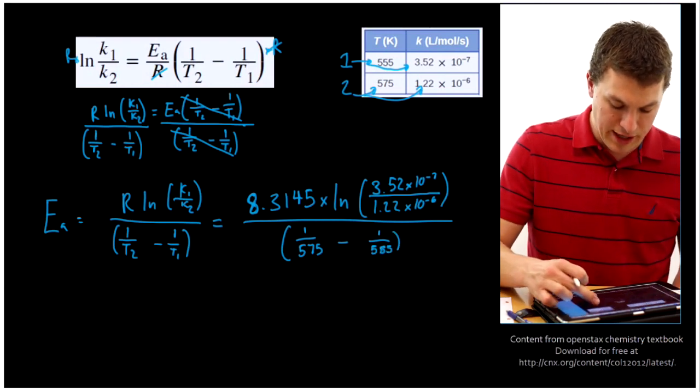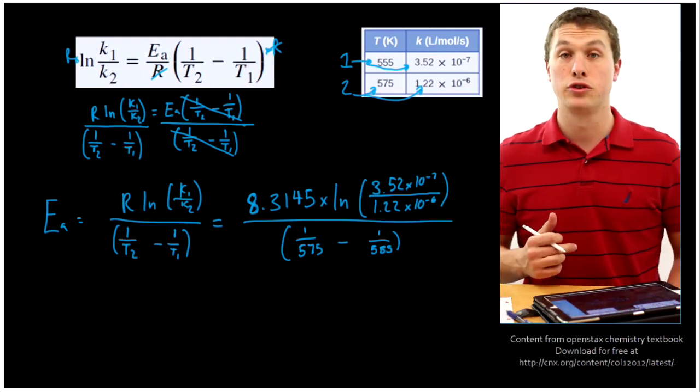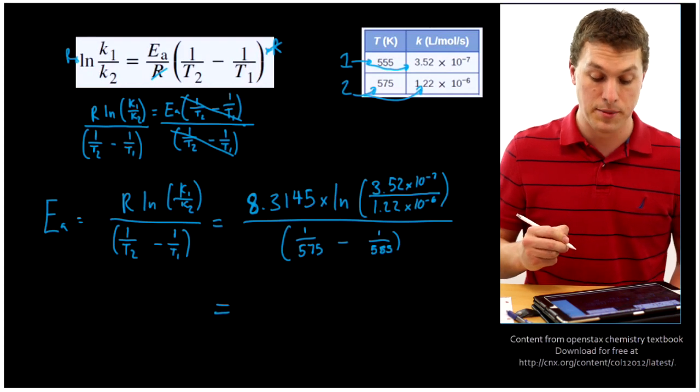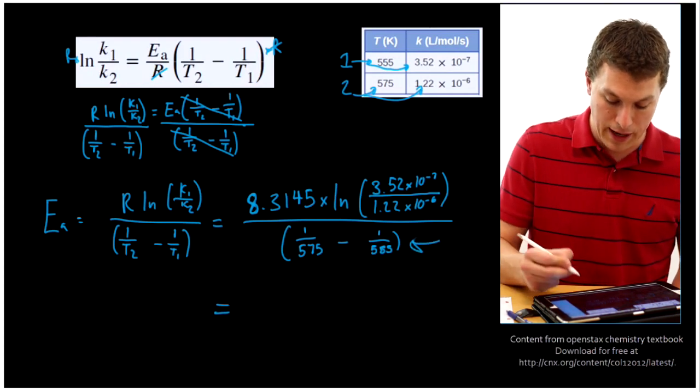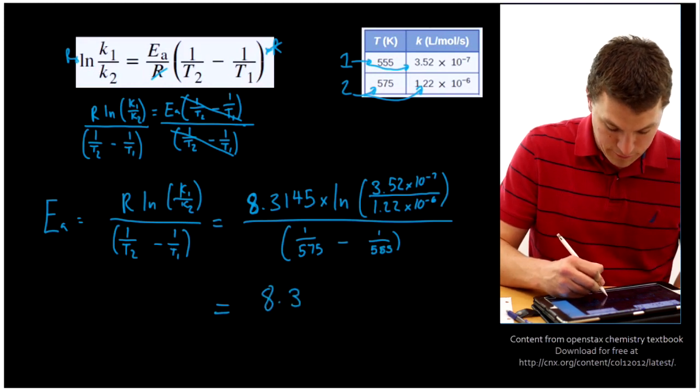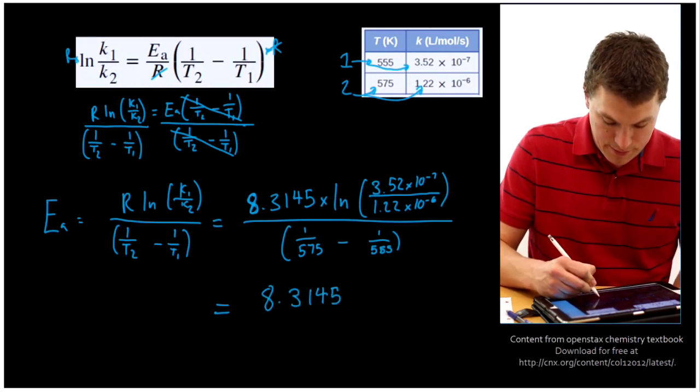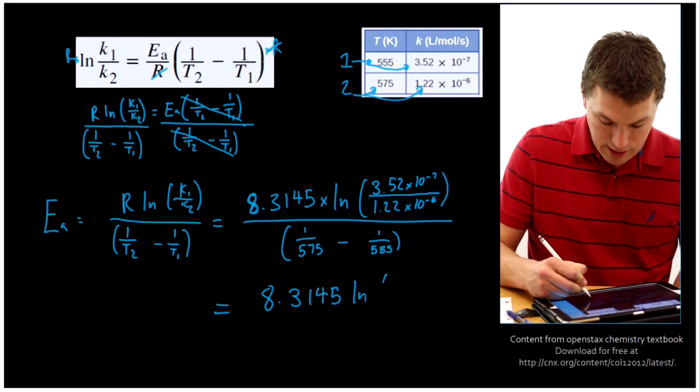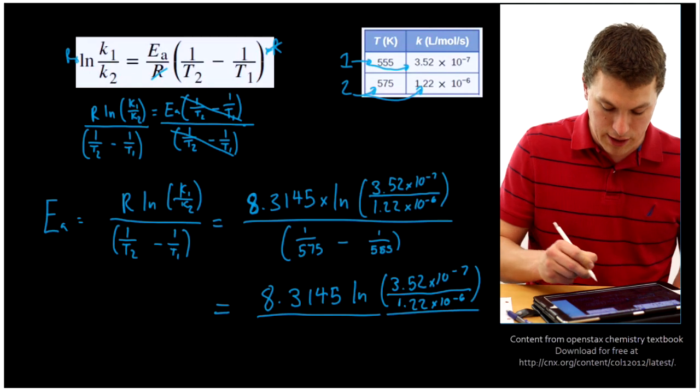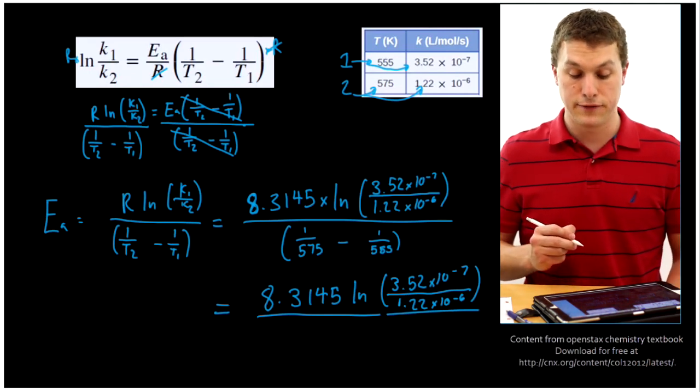So this is where I said we've got to be careful because it's easy to screw up this math when we plug it into our calculator. So what I'm going to do is resolve the denominator first, resolve this guy on the bottom first, and that will make our numbers look a little nicer. So we're still going to have 8.3145 up top times the natural log of 3.52 times 10 to the minus 7 over 1.22 times 10 to the minus 6.